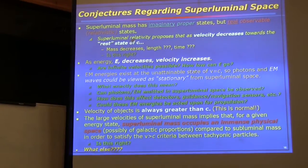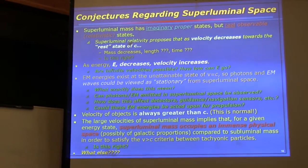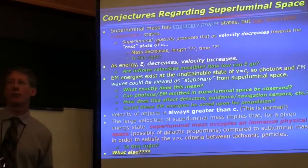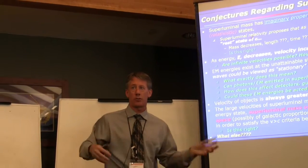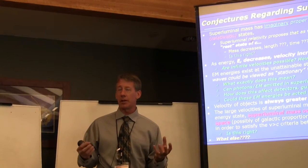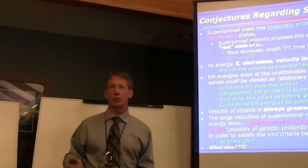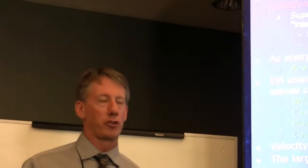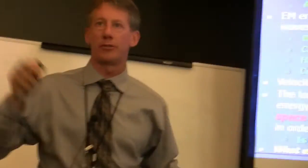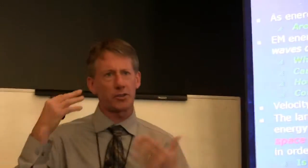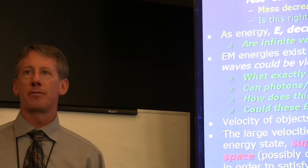Velocities of objects are always greater than c, so that's perfectly normal. Because velocities are greater than c and if you have real mass over there, and all masses have to be moving faster than light with respect to each other at all times per relativity, then the size of something over there may be absolutely huge — a car in superluminal space may take up the size of the Earth, just because everything has to be moving so fast relative to one another.